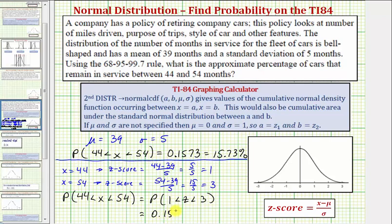Zero point one five seven three, which would be fifteen point seven three percent. Okay, I hope you found this helpful.